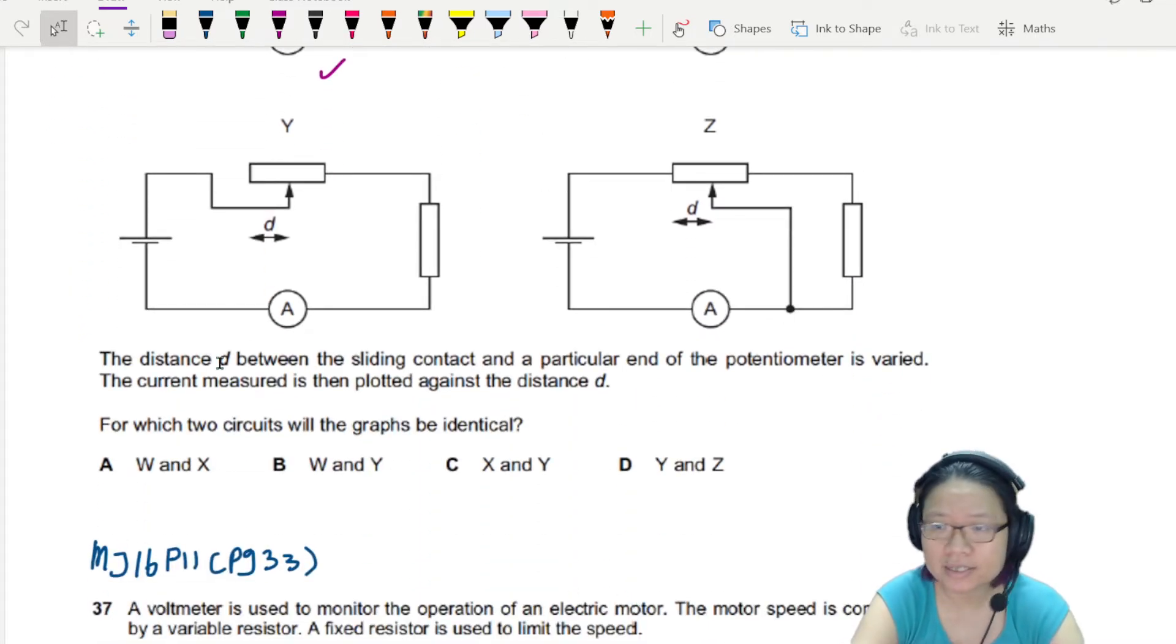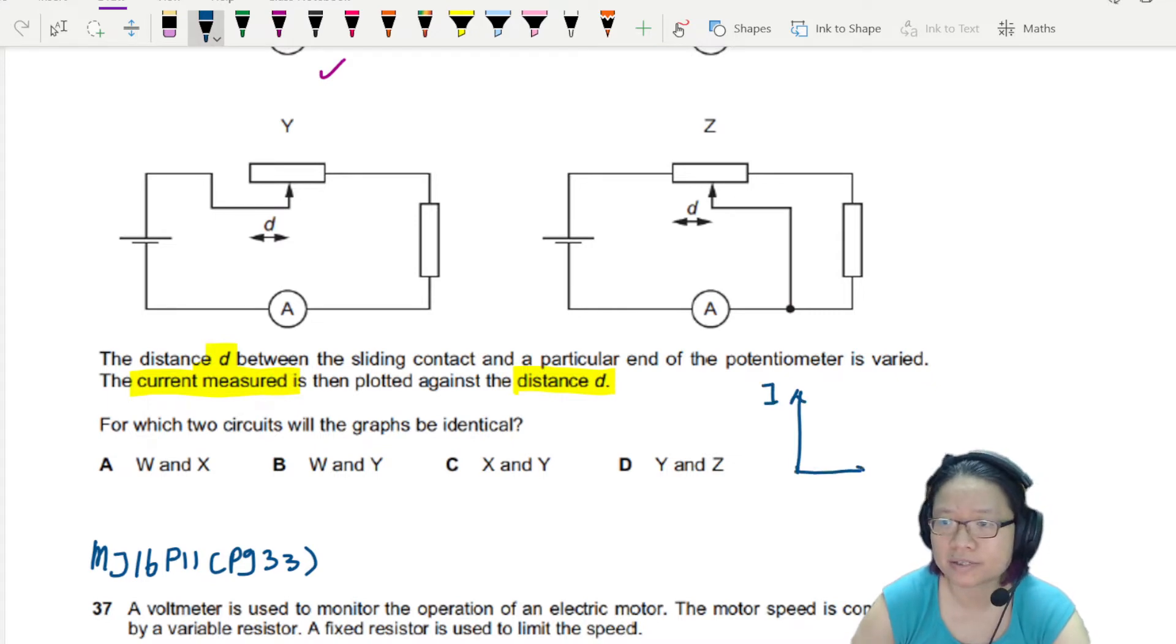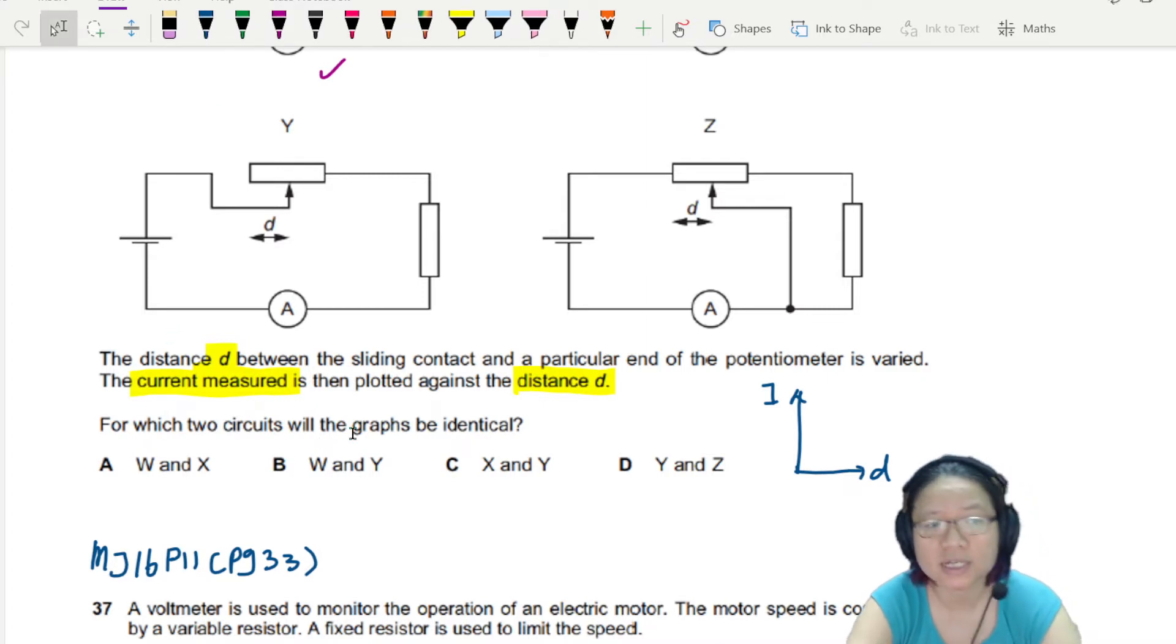The distance D between the sliding contact and a particular end of the potential meter is varied. So we are changing the distance D. And what are we measuring? We are measuring the current and it's plotted against the distance D. So basically we are plotting a graph of I against the distance D. For which two circuits will the graph be identical?